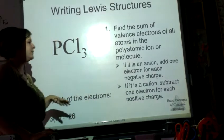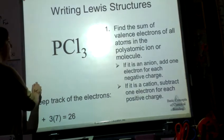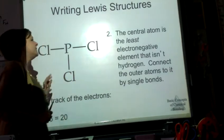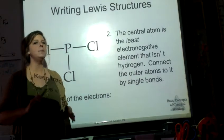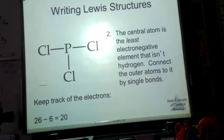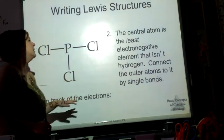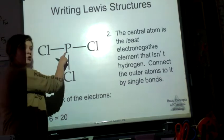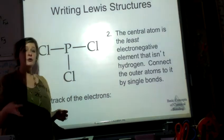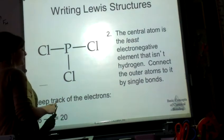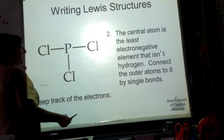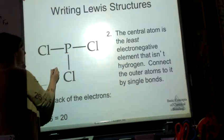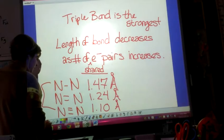If it's an anion, add one electron for each negative charge; if it's a cation, subtract one. The second step is to find the central atom, which is the least electronegative element — and it can never be hydrogen. Once we find the central atom, we draw a structural model placing the central atom in the middle, and connect all the outer atoms to it using single bonds.